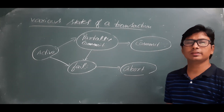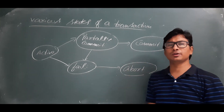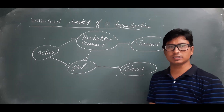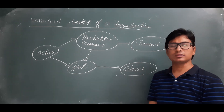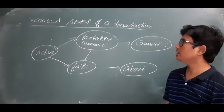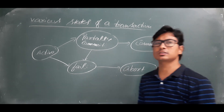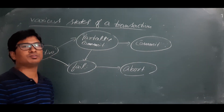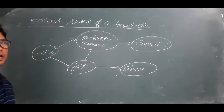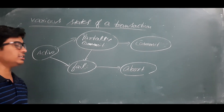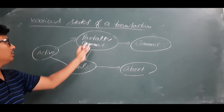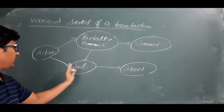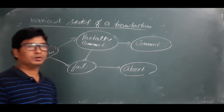Good morning students. In the earlier video we discussed what is a transaction and what are the various properties of a transaction. In this video we will discuss the various states or stages of a transaction. Any transaction will have five states: active, partially committed, committed, fail, and aborted.